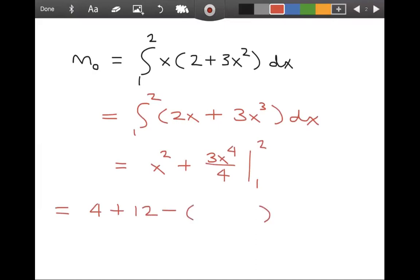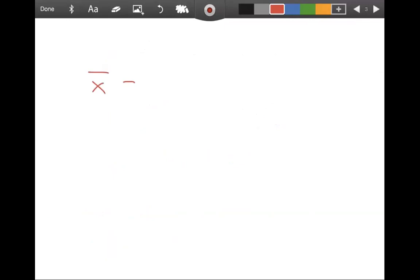And then subtracting the value at one, that's one plus three-fourths. So we're talking 16 minus one and three-fourths. I think I would rather write that as 57 over four. So we are almost there. That means that the center of mass is going to be M0 divided by M, which is 57 fourths divided by nine. In other words, one-ninth times 57 fourths. Nine and 57 have a common factor, three. Nine divided by three is three. 57 divided by three is 19. 19 over three times four is 19 over 12.